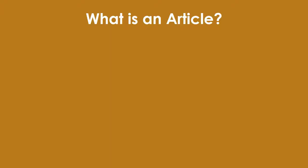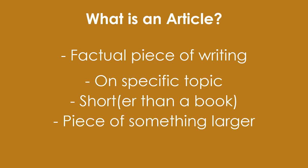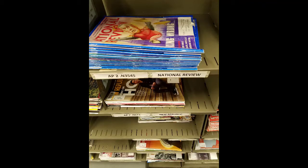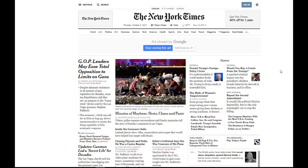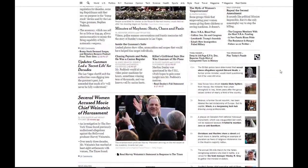What is an article? Typically, an article is a factual piece of writing on a specific topic. It's usually relatively short and a piece of something larger. That means it can be collected with a bunch of other articles and published in something larger, such as a journal, magazine, or newspaper. All of these could be printed, but it is more likely you will see these articles on a website. These collections of articles that get published are often called periodicals.